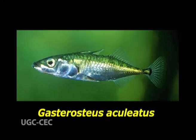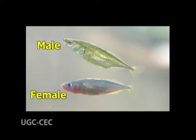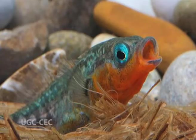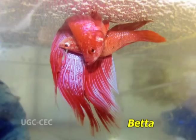Gasterosteus aculeatus provides a very peculiar and interesting nest example. The male stickleback collects dead aquatic weeds, which are joined together by a sticky secretion produced from the kidney. When the nest assumes a considerable size, the male makes a small tunnel. After formation of the tunnel, the male drags several mature females through an elaborate courtship ritual into the tunnel for egg laying. After laying eggs, the female swims away and the male guards the fertilized eggs, keeping away all enemies, until development is complete.